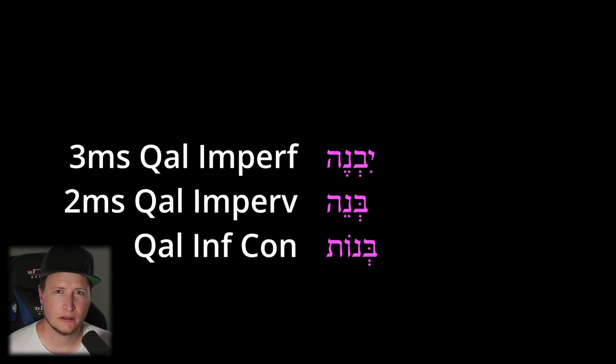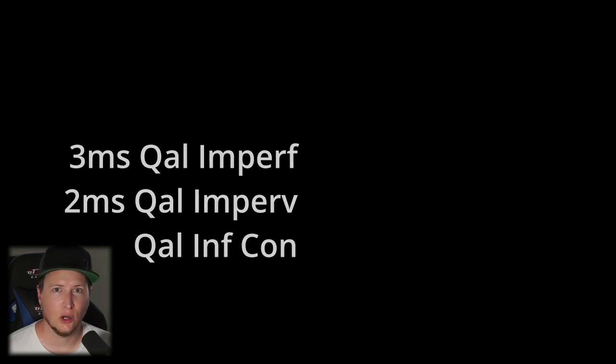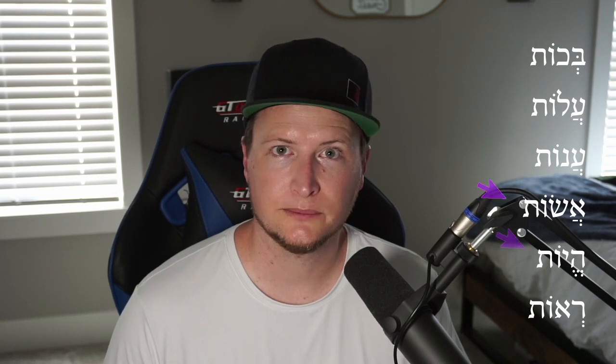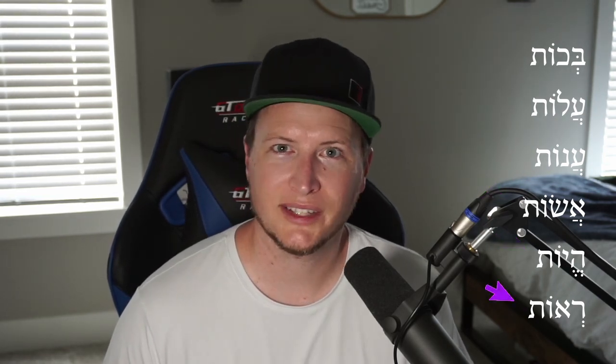The hey changes and our holem lengthens to a holem vav, and so we get the oth ending. Look at a few more examples: b'koth to weep, aloth to go up, anoth to answer, asoth to do, heyoth to be, reoth to see.